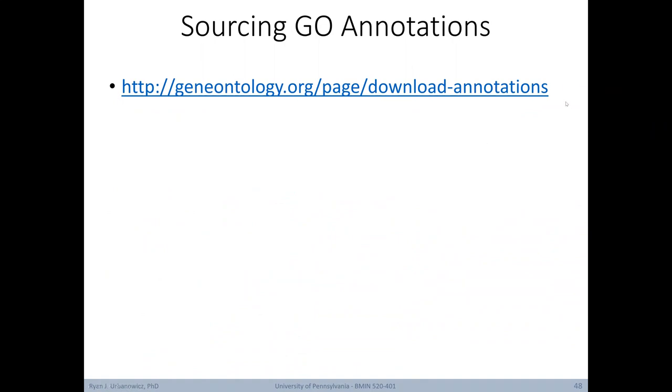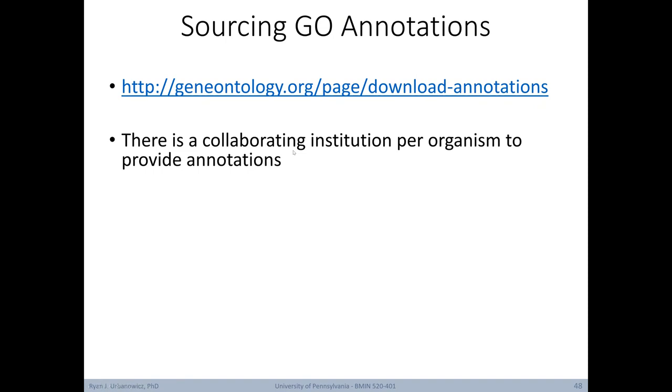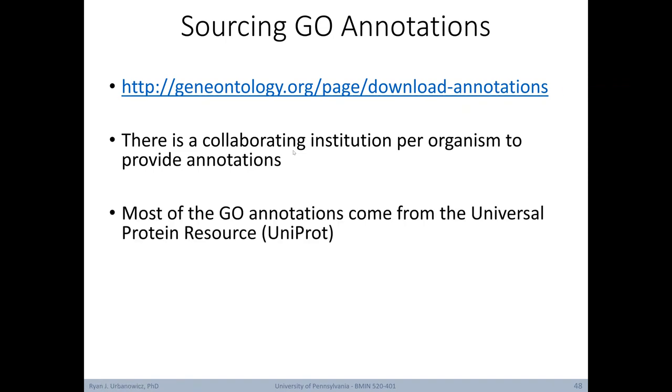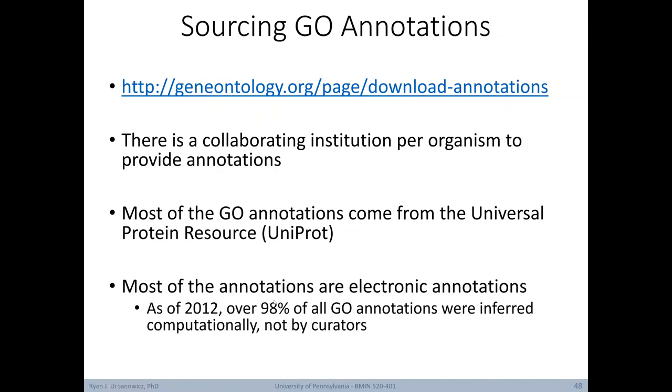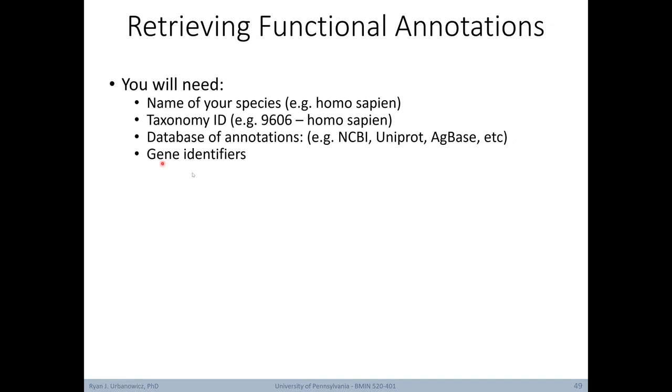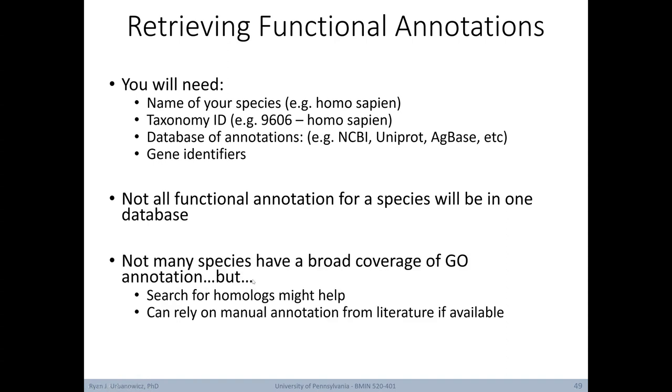So where do you go to get these GO annotations that have already been established? Well, there's a link here where you can go ahead and download all GO annotations. Notably, there's a collaborating institution per organism that provides these annotations. Most of the GO annotations come from the Universal Protein Resource or UniProt. Also of note, most of the annotations are electronic. As of 2012, over 98% of all GO annotations were inferred computationally, not manually by curators. In order to retrieve your functional annotations, you'll need the following: the name of your species, a taxonomy ID, the database from which you want to draw these annotations, and gene identifiers to connect your genes to their respective functional annotations. Notably, not all functional annotations for species will necessarily be in one database, and not many species have a broad coverage of GO annotation. However, when needed, you can go about searching for homologues to fill in some of those blanks, or you can laboriously turn to manual annotation from the literature if it's both practical and the information you're looking for is available.